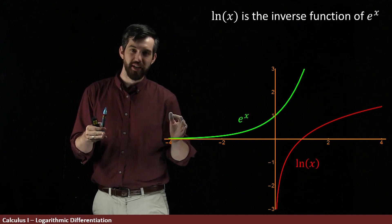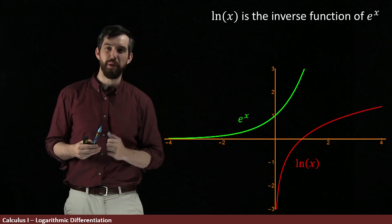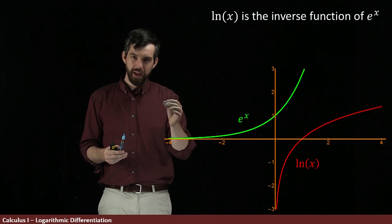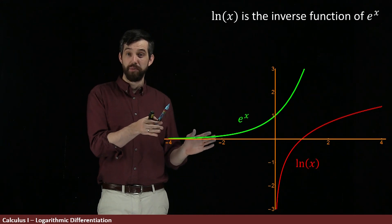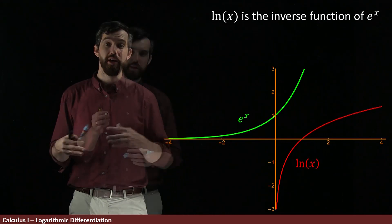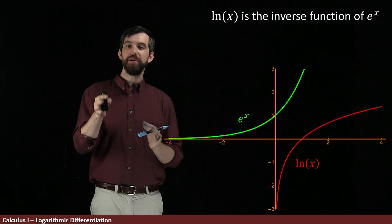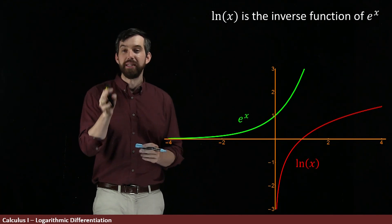Now, the question is, I've got this lovely function here, but what is its derivative? And we're going to do the same basic trick that we did when we looked at the derivative of arctangent. For these inverse functions, we're always going to be applying implicit differentiation.